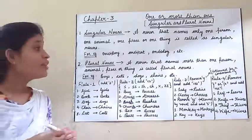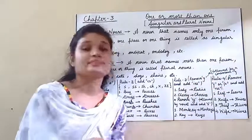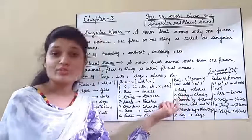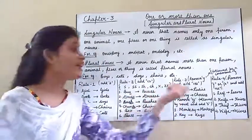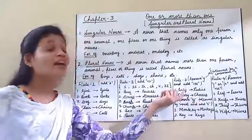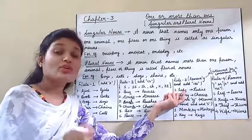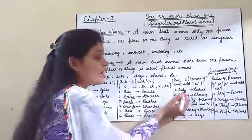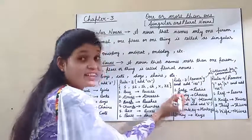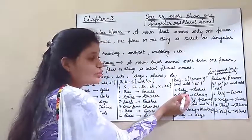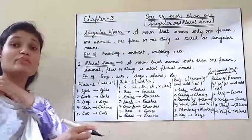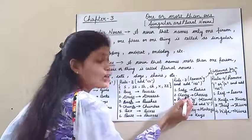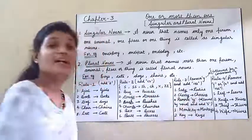Coming to the next rule: Remove Y followed by a consonant and add IES. इस rule में हम देखते हैं कि अगर Y के पहले जो letter है वो consonant हुआ, तो हम Y को remove करके IES add कर देते हैं. For example: 'lady' — the last letter is Y, and before Y it is D, which is a consonant. So we remove Y and add IES — 'lady' becomes 'ladies.' Similarly, 'cherry' — Y के पहले consonant है, so we remove Y and add IES — it becomes 'cherries.'